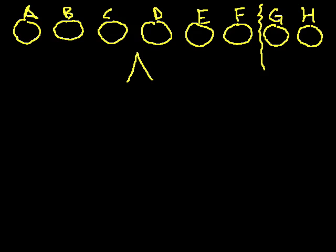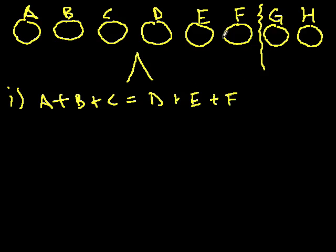So let me write that down. So case one, A plus B plus C equals D plus E plus F. Okay, then I measure G, and I weigh it, and I compare it to H, and whichever is the heavier one is then the odd ball out. So maybe it's G, okay? So I've then, it works in this case.